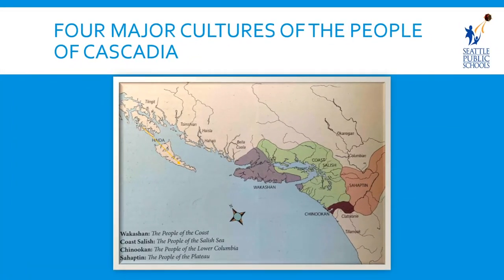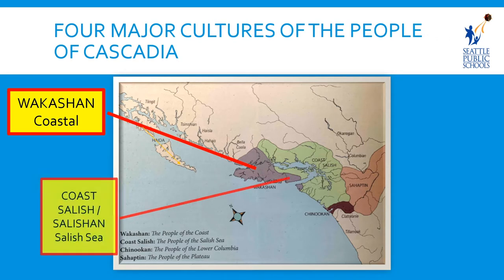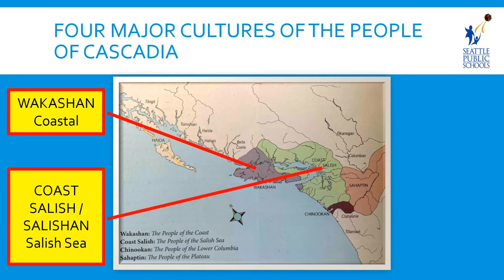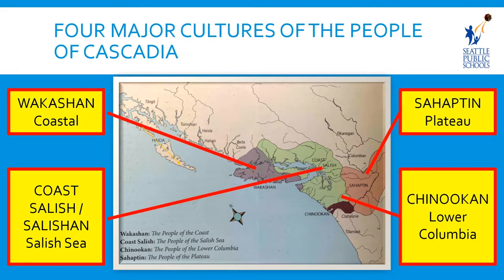We talked about the four major cultures of Cascadia: Waukesha, Coast Salish, Chinookan, and Sahaptan — those are also language groups in that area. The language groups are Waukesha, Salishan, Sahaptan, and Chinookan.